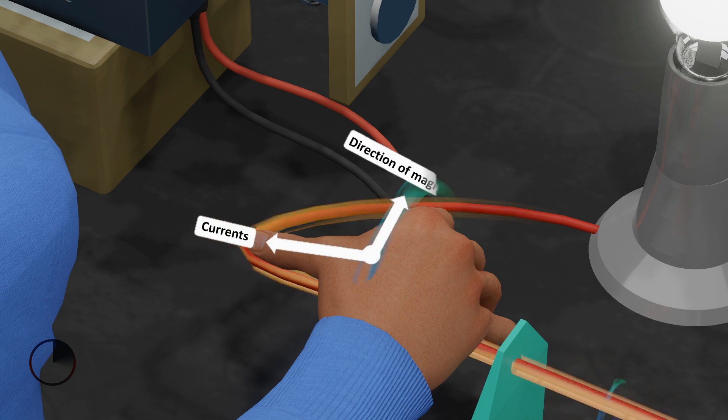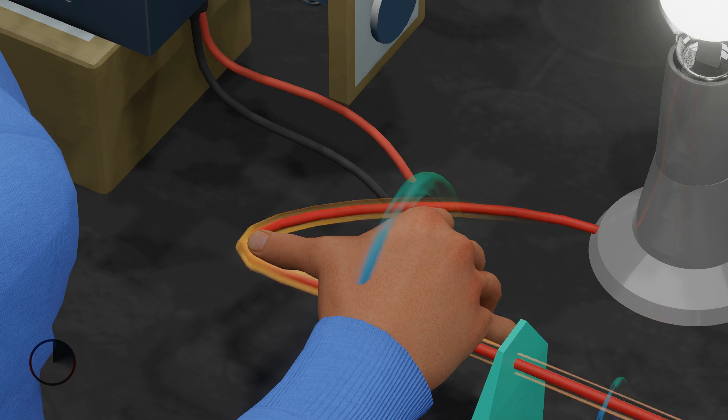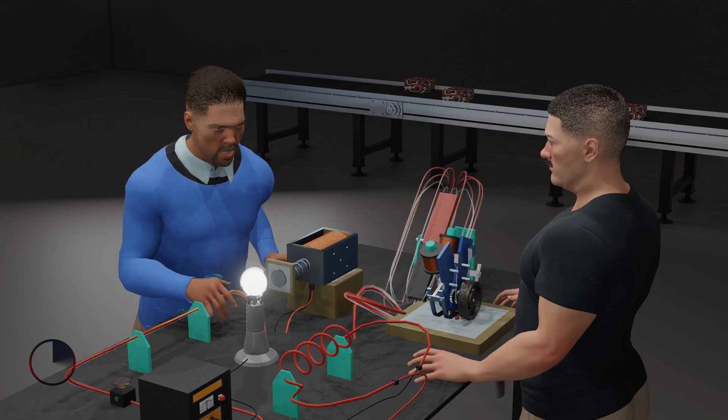This rule states that if a current-carrying conductor is held by the right hand, and when keeping the thumb straight and if the direction of electric current is in the direction of the thumb, then the direction of wrapping of other fingers will show the direction of the magnetic field.